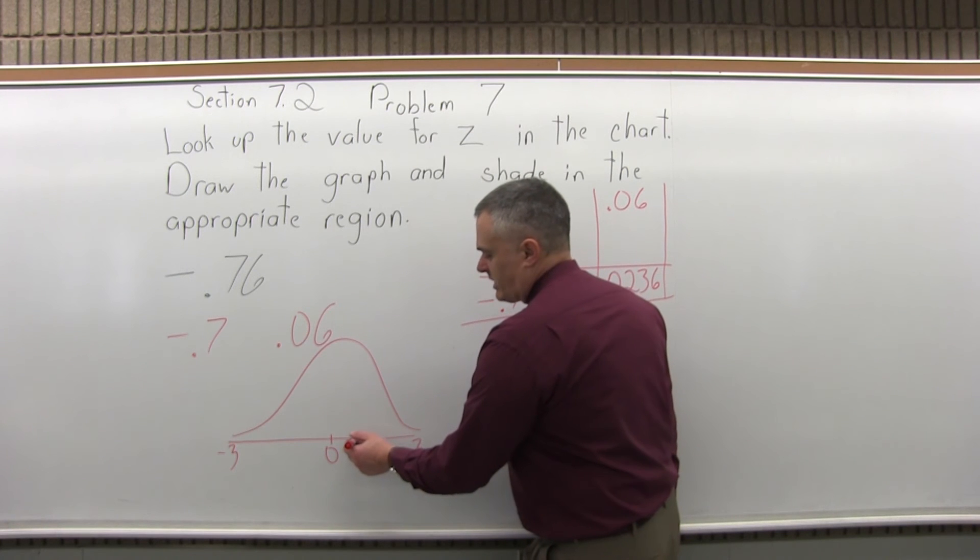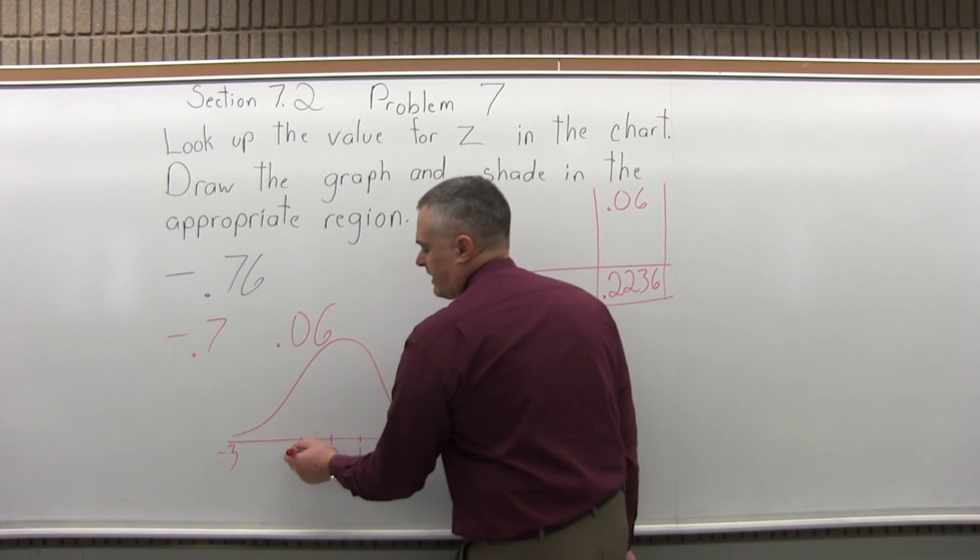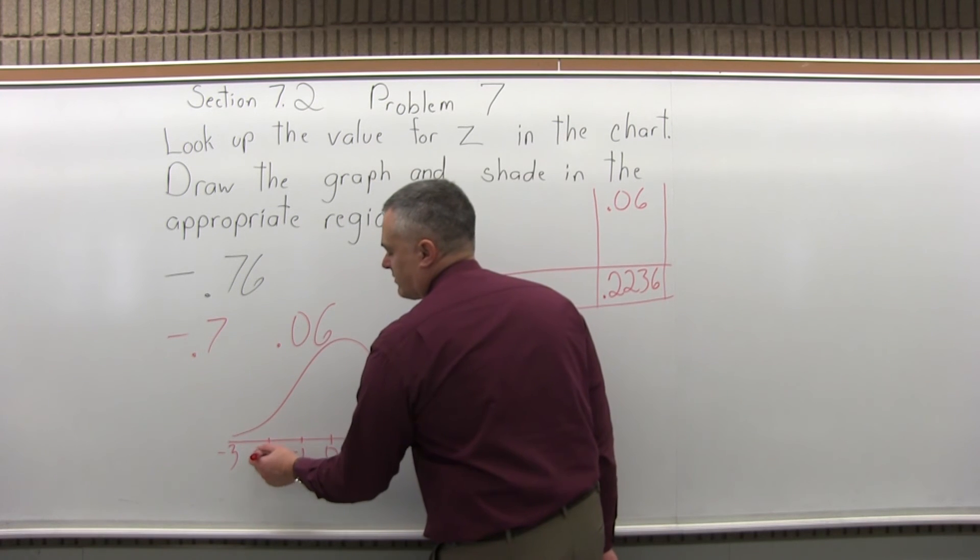Then by eye on the right, you can fill in positive one, positive two, positive three. And on the left, negative one, negative two, negative three, like that.